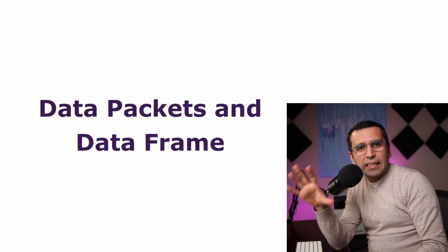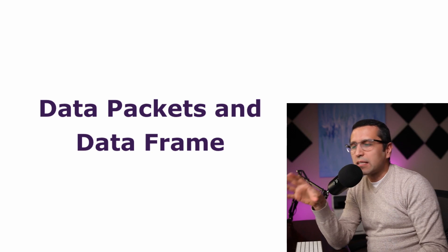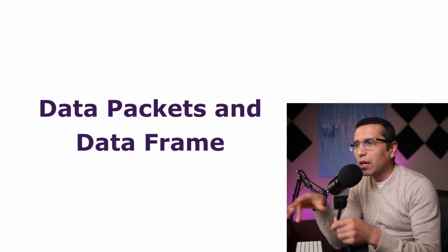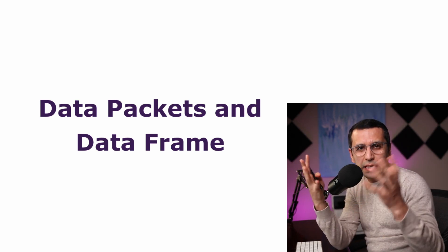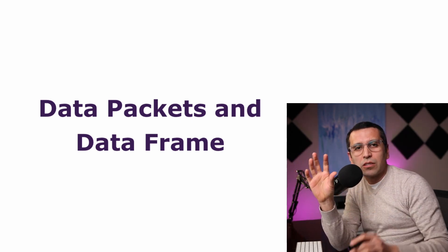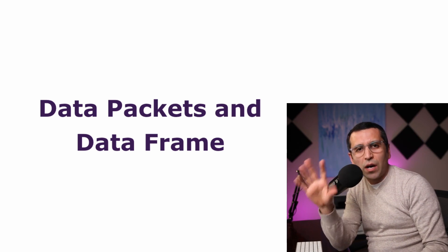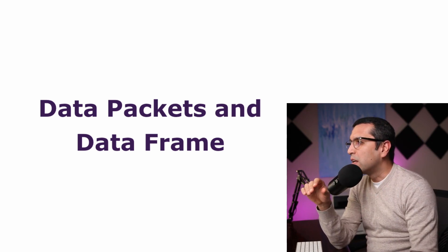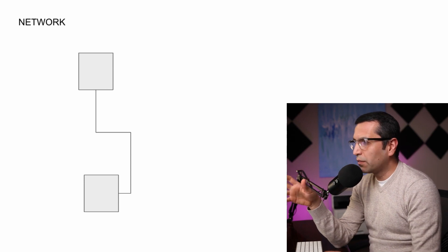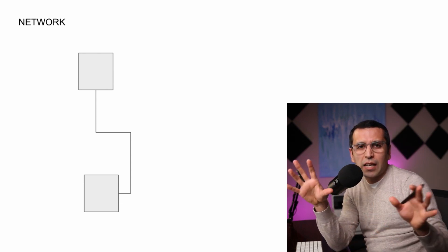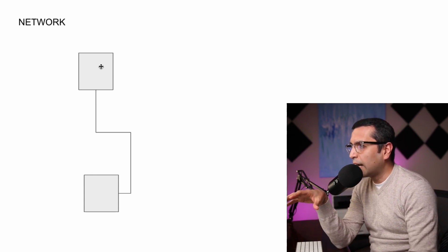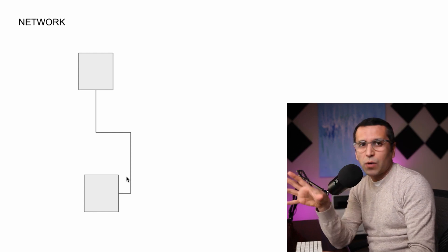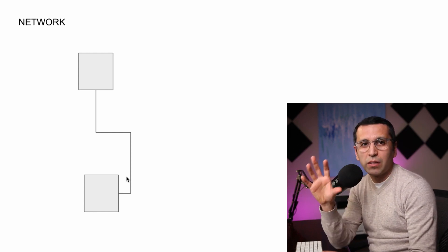Let's talk about what data is, and what data frames and data packets are. Before talking about data, we need to analyze what the network itself is, because our data is going to be transferred from one computer to another. Basically, the network is the connection between at least two computers. On the diagram you can see device A and device B, and they have a connection between each other — so right now we have a very simple network.